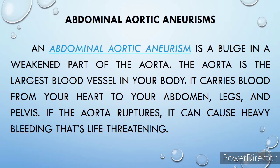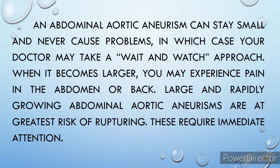Abdominal aortic aneurysms. An abdominal aortic aneurysm is a bulge in a weakened part of the aorta. The aorta is the largest blood vessel in your body; it carries blood from your heart to your abdomen, legs, and pelvis. If the aorta ruptures, it can cause heavy bleeding that is life-threatening. An abdominal aortic aneurysm can stay small and never cause problems, in which case your doctor may take a wait-and-watch approach. When it becomes larger, you may experience pain in the abdomen or back. Large and rapidly growing aneurysms are at greater risk of rupturing and require immediate attention.